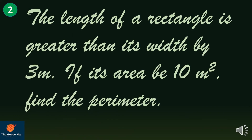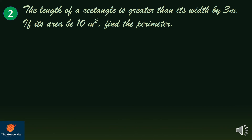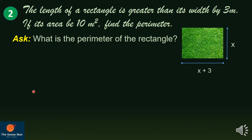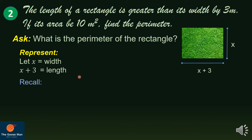Let us now consider the second problem. The length of a rectangle is greater than its width by 3 meters. If its area is 10 square meters, find the perimeter. We want to find the perimeter. From our illustration, x equals the width while the length equals x plus 3. Recall that area equals length times width, so we substitute the length and width values: we have x plus 3 times x, and the area equals 10.